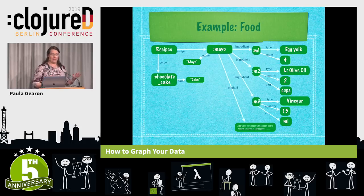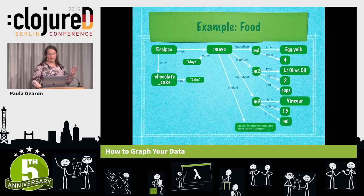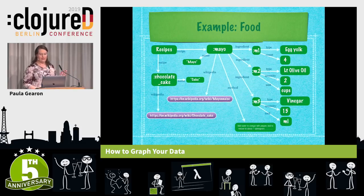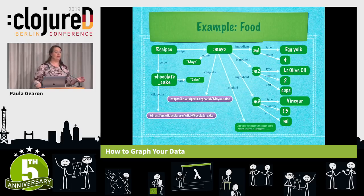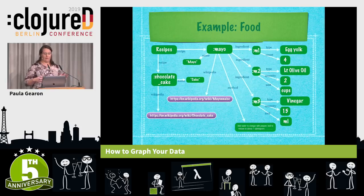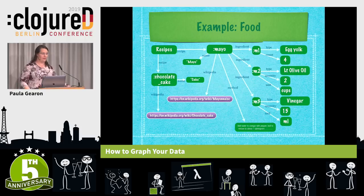Using some of the ideas from the semantic web, data can also be linked to URLs, which lets us refer to external data as part of the graph. This is particularly interesting when those URLs form nodes in foreign graph databases, like Freebase, and this sort of reference is the foundation of linked data, which is part of the semantic web from W3C.